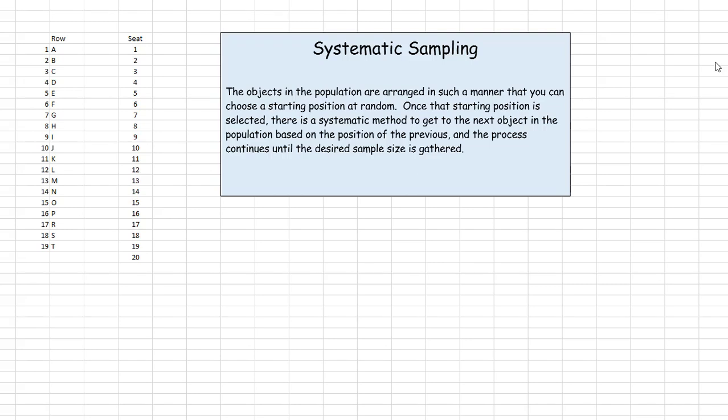Systematic sampling. In this method, the objects in the population are arranged in such a manner that you can choose a starting position at random. Once the starting position is selected, there's a systematic method to get to the next object in the population based on the position of the previous, and the process continues until the desired sample size is gathered.